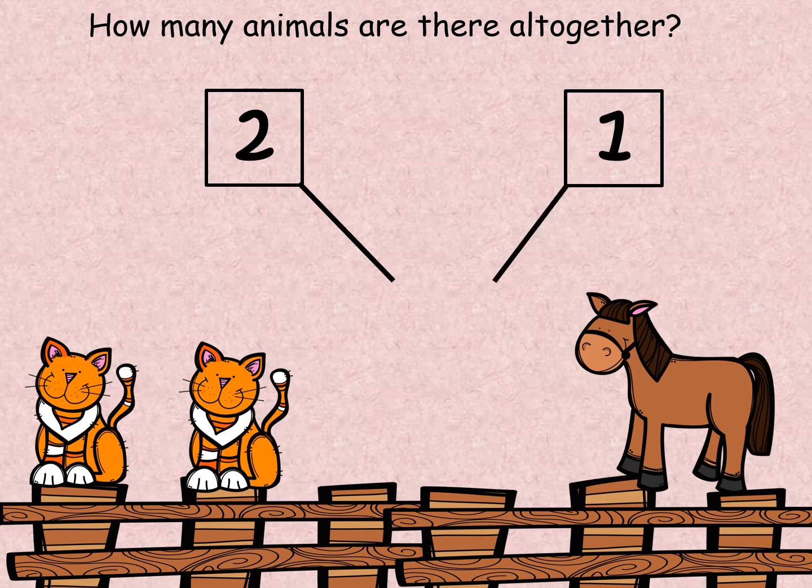So now we're going to count all the animals all together to find out how many there are. Let's start at the cats. One, two, three! There are three animals all together.